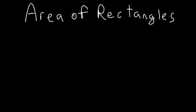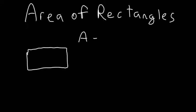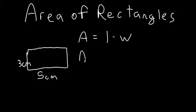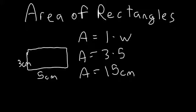Now for a rectangle — not all the sides are the same — the area of a rectangle equals length times width. Let's give this some numbers: a 3 centimeter by 5 centimeter rectangle. Our area equals 3 times 5, so our area equals 15 centimeters squared.